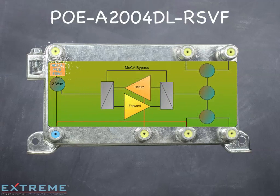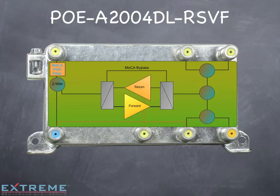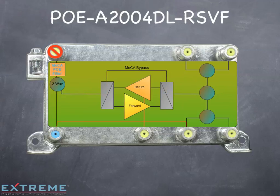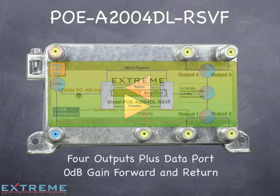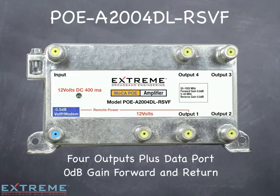The PoE-A2004DL-RSVF is a four output data plus amplifier with a point of entry filter by the input port. It will allow the MOCA signal to communicate between all output ports and the data plus port, but will not allow the signal to exit the input port. It has 0 dB of gain in the forward and return.